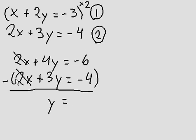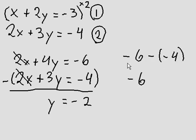Negative 6 minus negative 4 is negative 2. It's easy to make a mistake there, so be careful. Negative 6 plus 4 is negative 2. So we got y, y is negative 2.